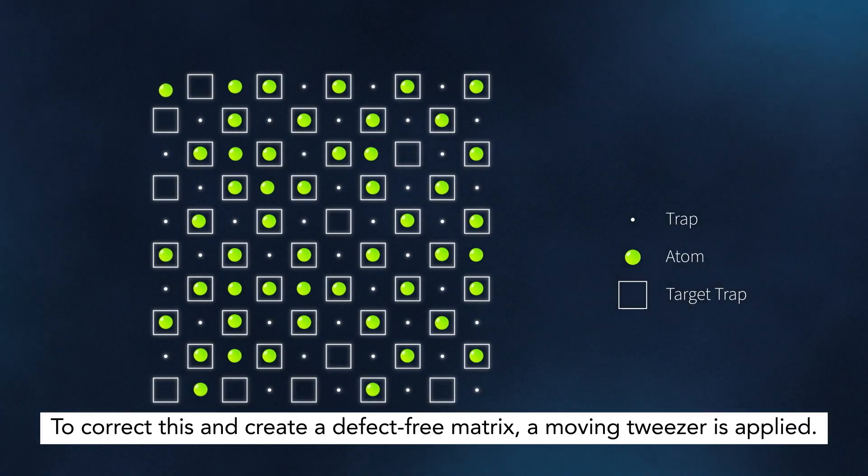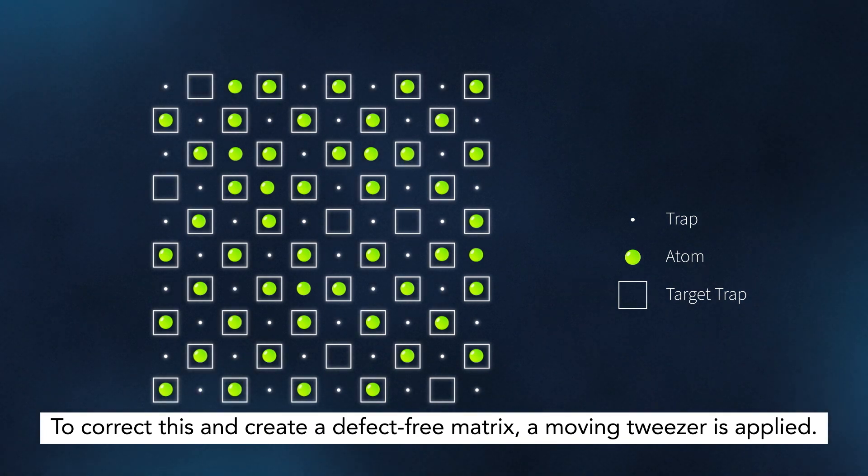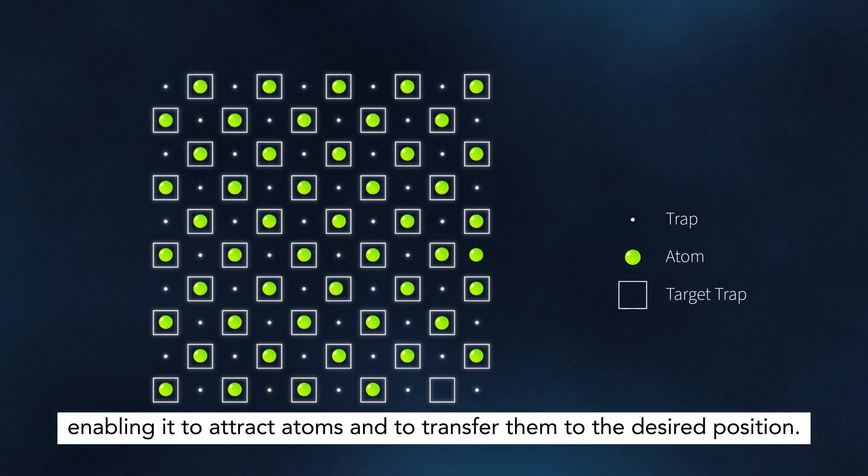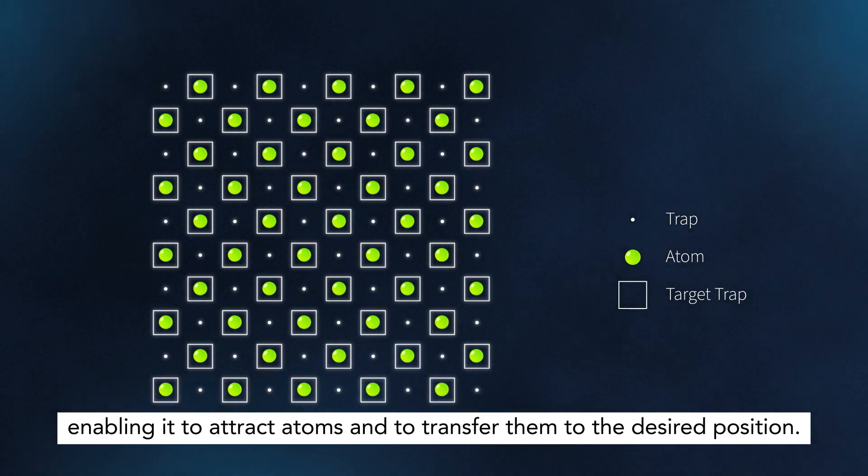To correct this and create a defect-free matrix, a moving tweezer is applied. It uses a stronger laser beam than the first tweezer, enabling it to attract atoms and transfer them to the desired position.